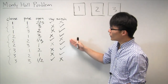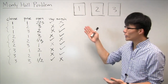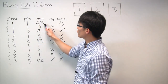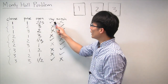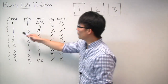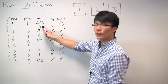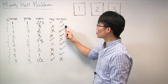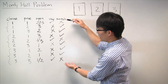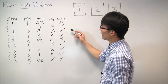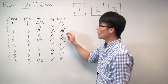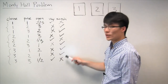We can also be more methodical and list out all possible outcomes. For example, if you chose door 1 and the prize was behind door 1, your friend can open door 2 or door 3 since both are empty — staying wins, switching loses. But if you chose door 1 and the prize was behind door 2, your friend is forced to open door 3 — staying loses, switching wins. And so on for the other cases. This exhaustive list confirms that staying wins only if your first choice was correct, and switching wins in all other cases. So 1/3 of the time staying wins, and 2/3 of the time switching wins.